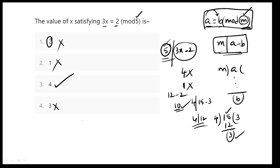Ith meaning, x place lo 4 bethkundamu. 3 times 4 is 12 is equal to 2 modulo 5 anedhi. 5 anedhi, dhe ni divide chas kundamu, 12 nu divide chas kundamu, remainder 2 oas kundamu.